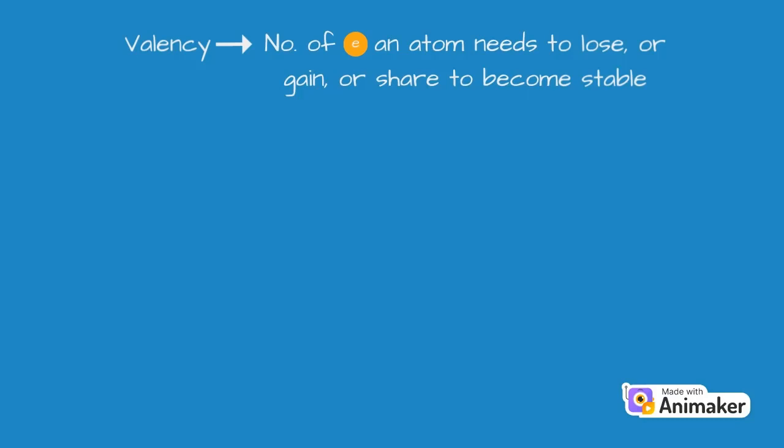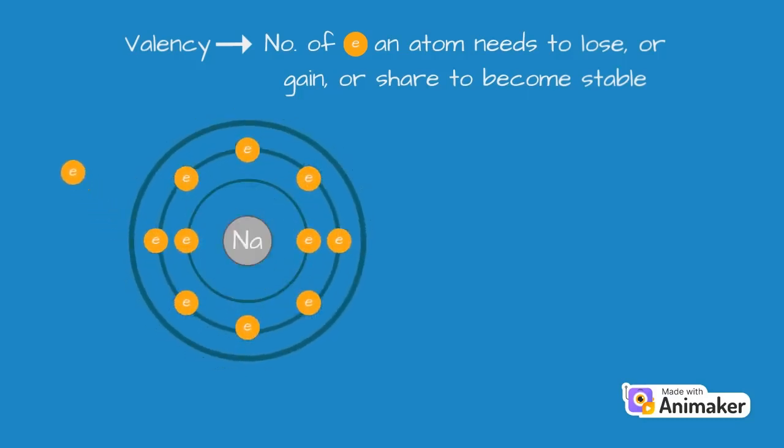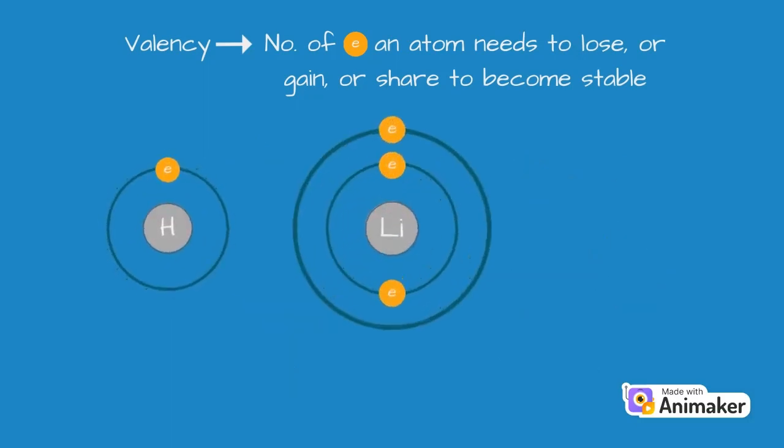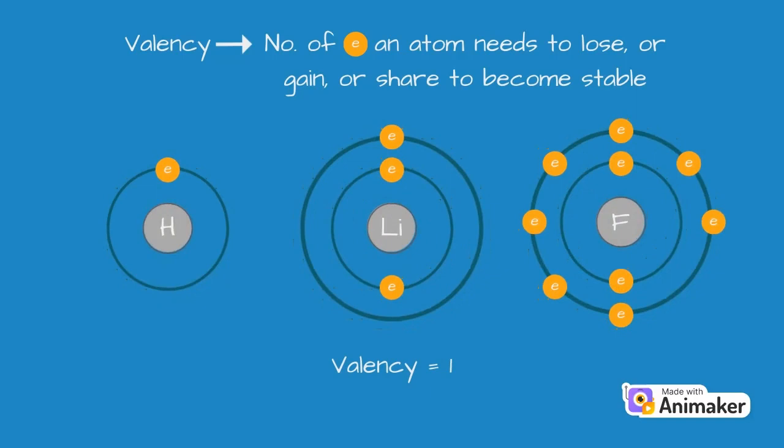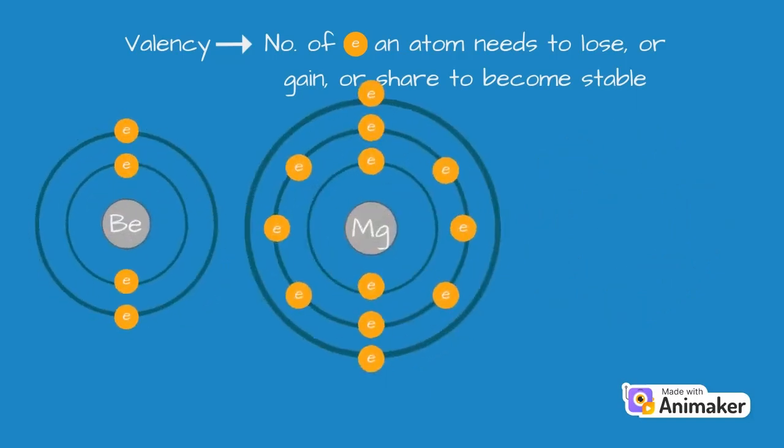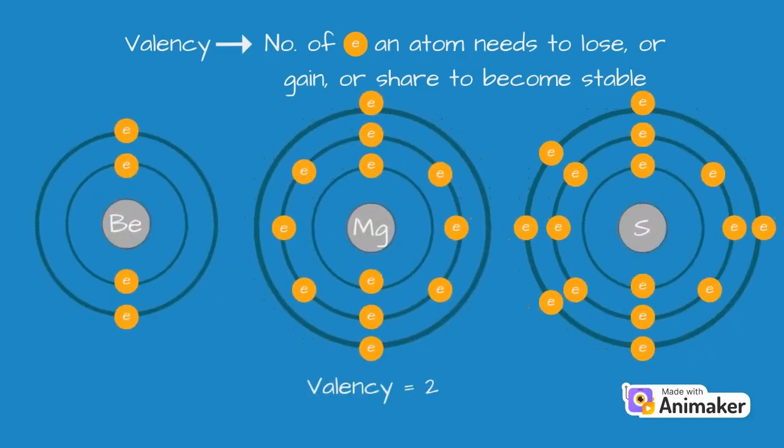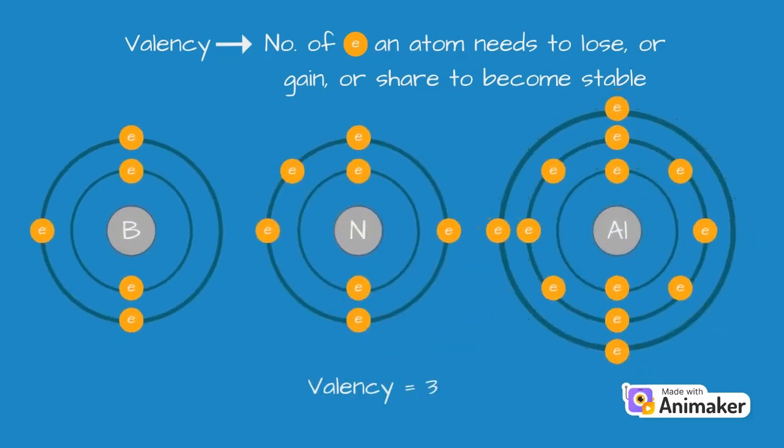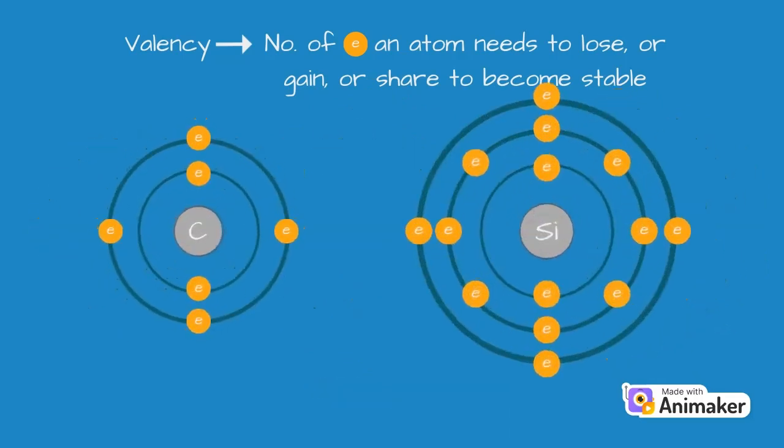From our examples, sodium needs to lose 1 electron to become stable, so its valency is 1. Oxygen needs to gain 2 electrons to become stable, so its valency is 2. Similarly, hydrogen, lithium, and fluorine has a valency of 1, beryllium, magnesium, and sulfur has a valency of 2, boron, nitrogen, and aluminum has a valency of 3, and carbon and silicon has a valency of 4.